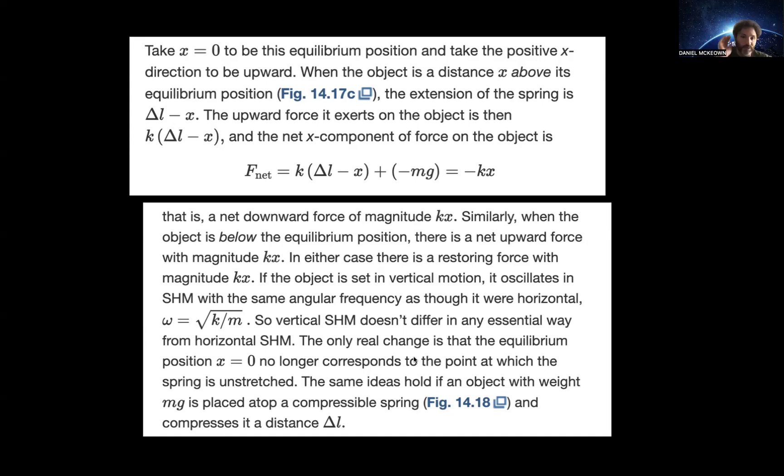The weight just shifts it to a new equilibrium position, and then we're right back to where we started from. We just have to take that equilibrium position into consideration. X equals zero no longer corresponds to the point where the spring is unstretched. Equilibrium happens instead where the spring is stretched out to the point where we have the mass.